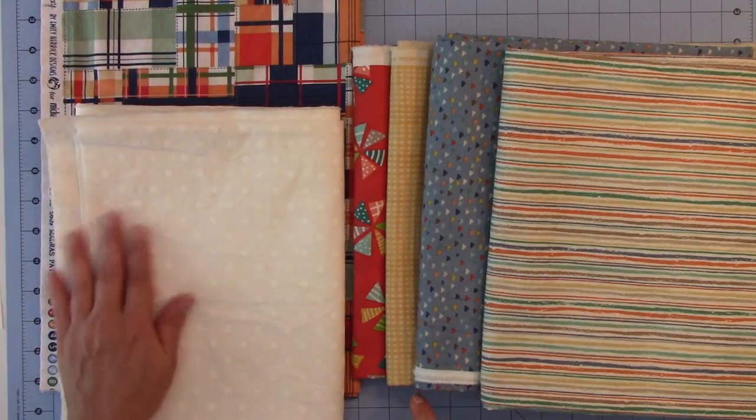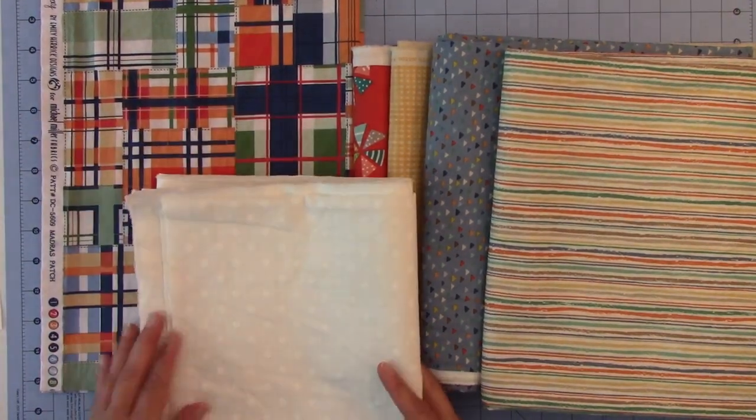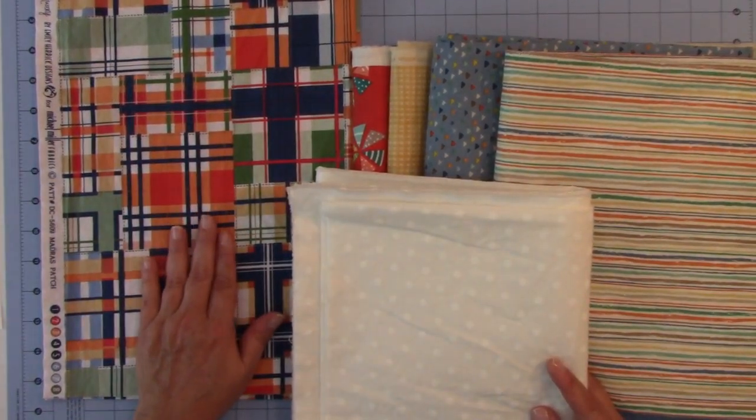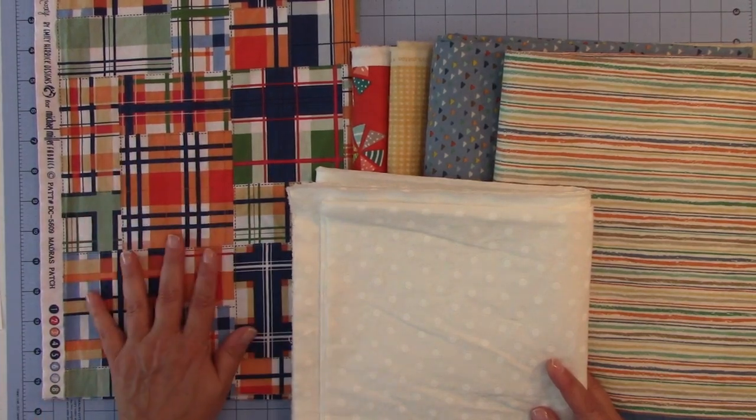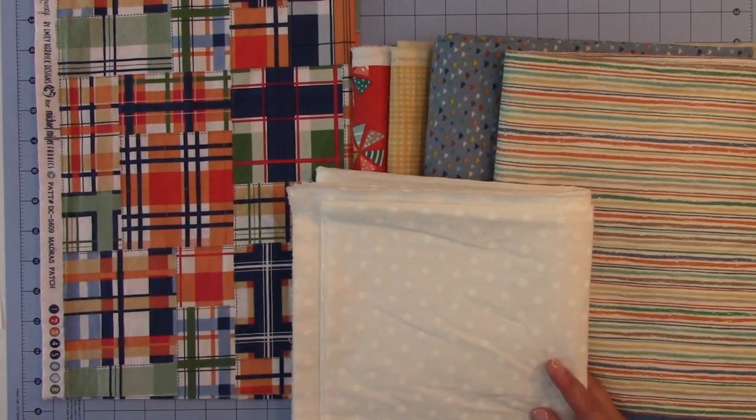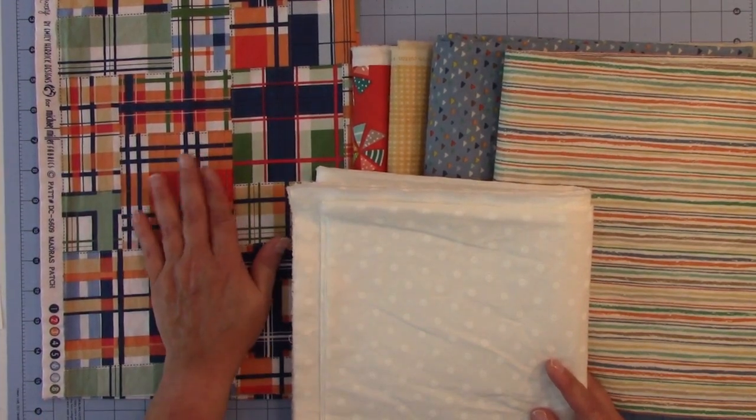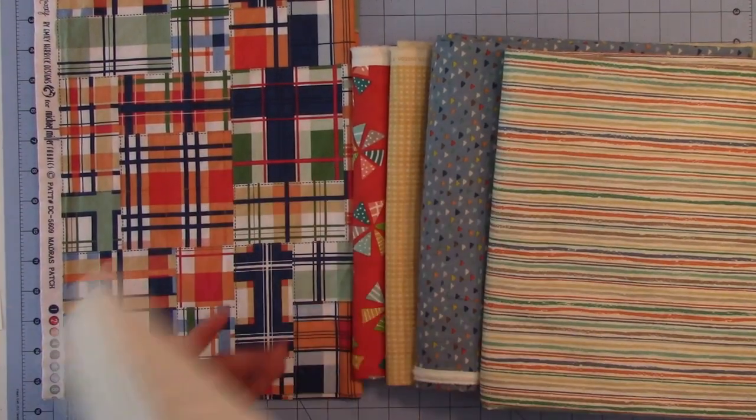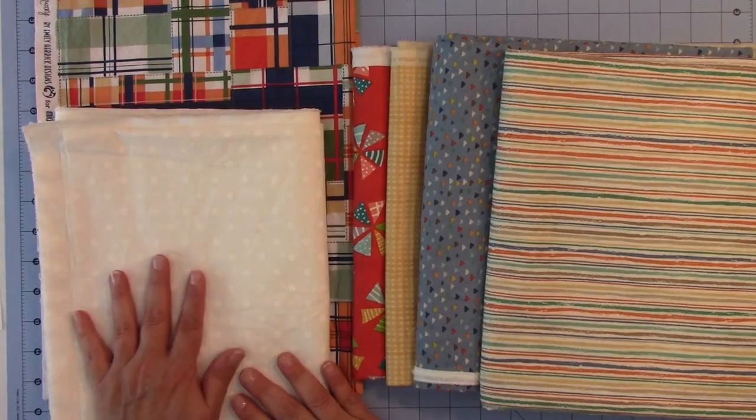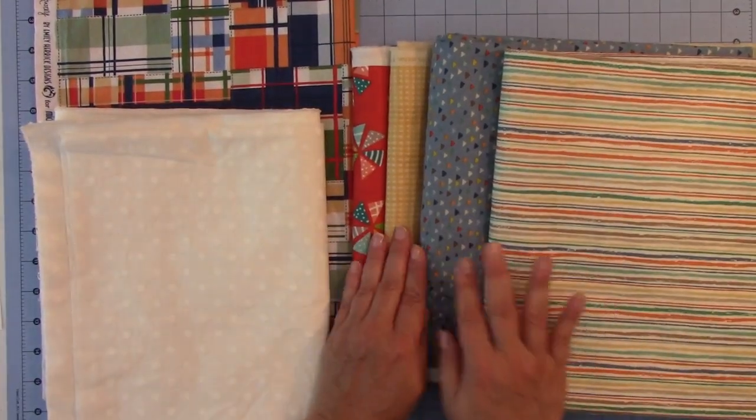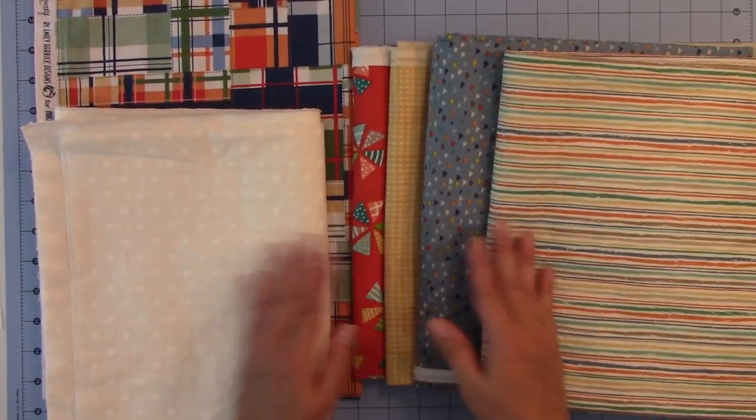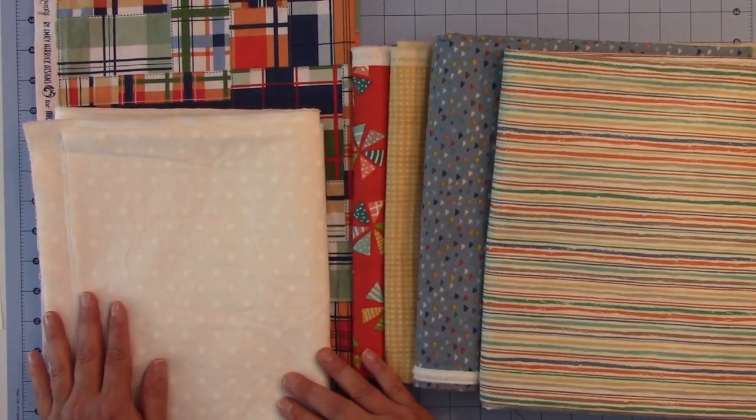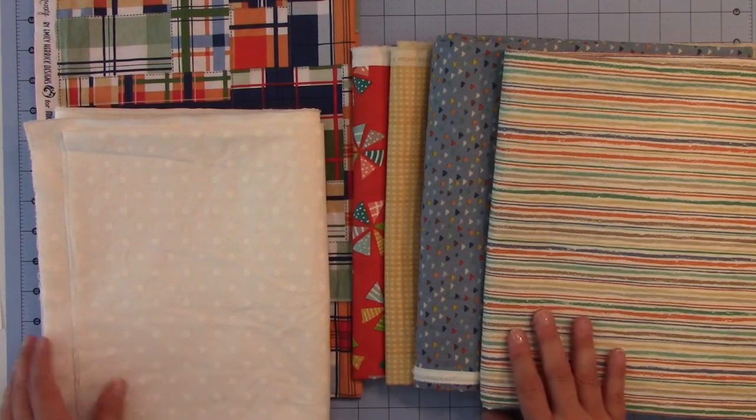When you're choosing your fabrics, I like to find one that interests me because you're going to see this one most in the quilt. And I like to choose very colorful fabrics, but that's me. So just find the fabric that you like that will be the main focus of the quilt, and then find a good background fabric, or light fabric, and then find your four fabrics for your geese. So it's simple to pick six fabrics.